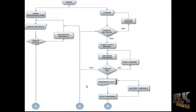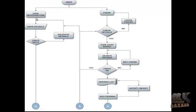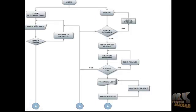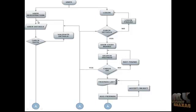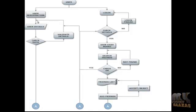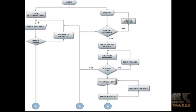Now let's see the data flow diagram of our project. Here, the user needs to register in the online social network and provide their user data. Those details will be checked in the database, because an already registered user should not be registered again. We will be validating the user information from the database.